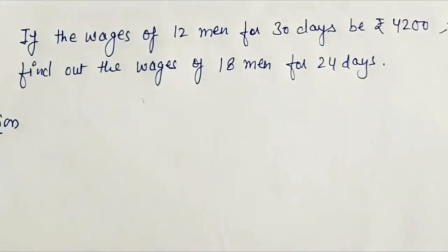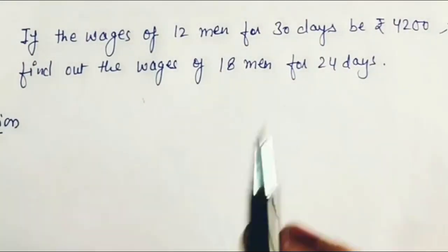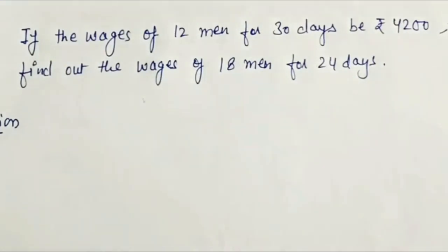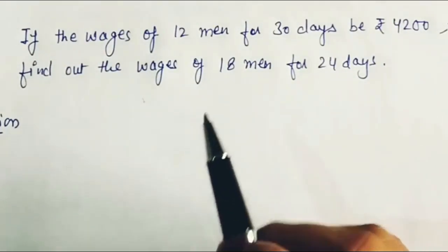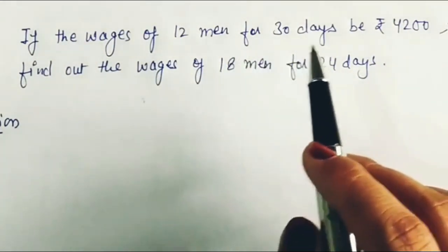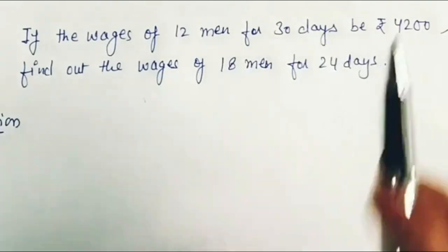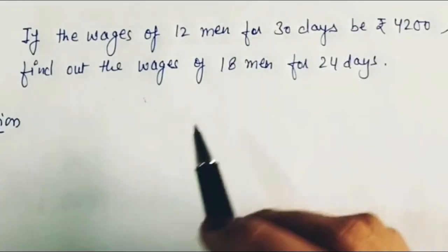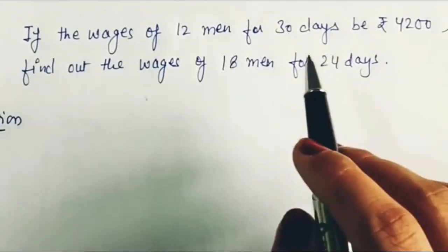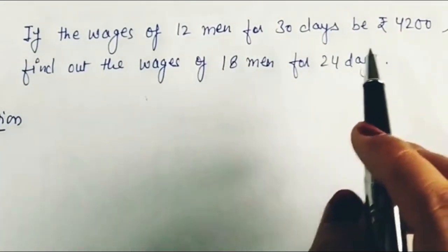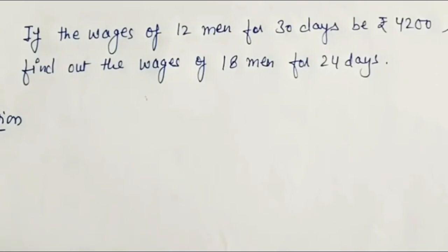So first of all, we need to identify which quantities are given. We have three quantities here: men, days, and wages. If 12 men work for 30 days, they get wages of Rs. 4200.